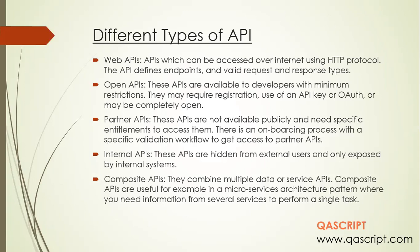Coming to the last type — composite APIs — they are a combination of multiple data or service APIs. A good example could be a microservices architecture where you need access to different APIs or services to perform a single task. These are the different types of API you will come across while working on development or testing APIs.